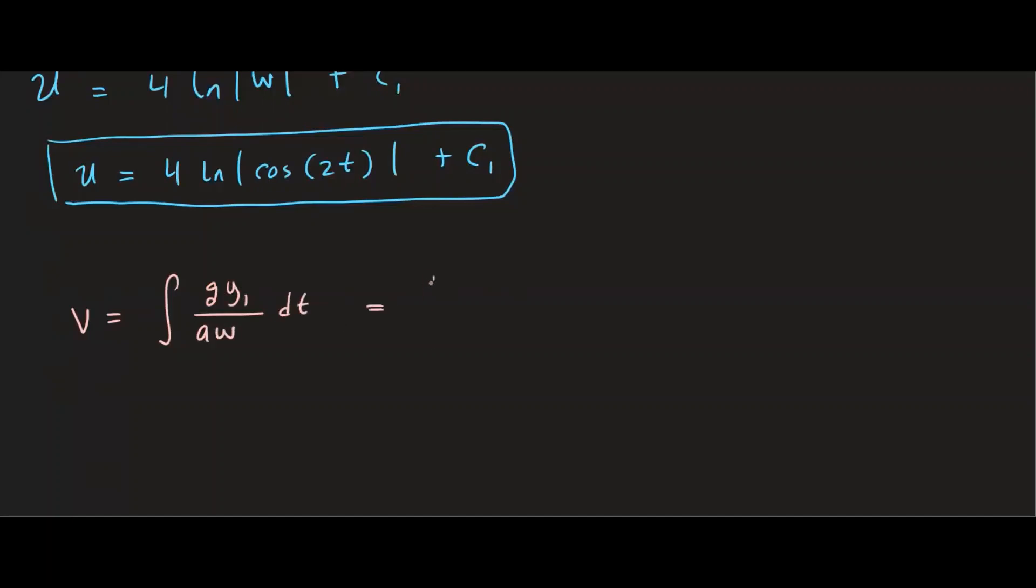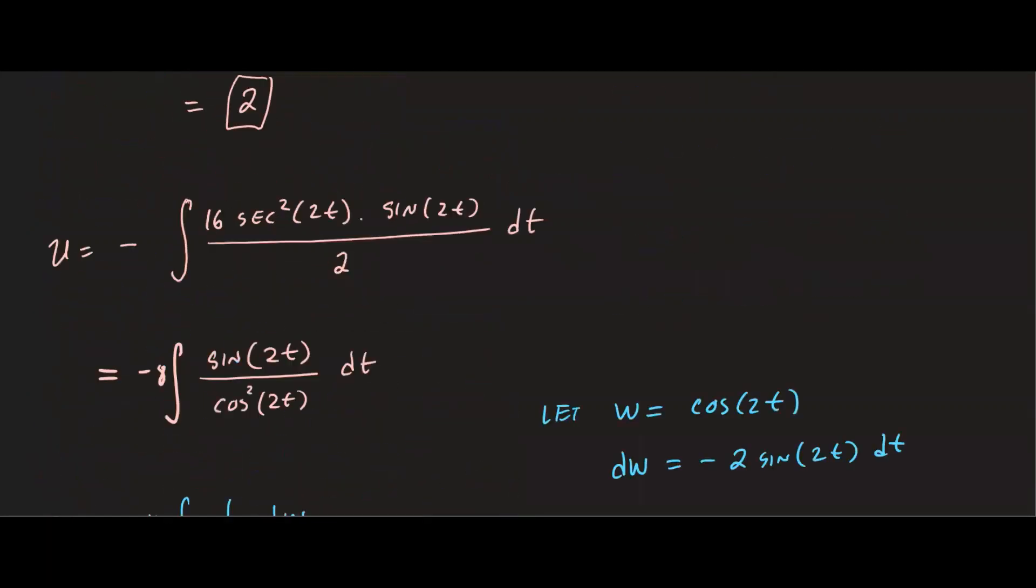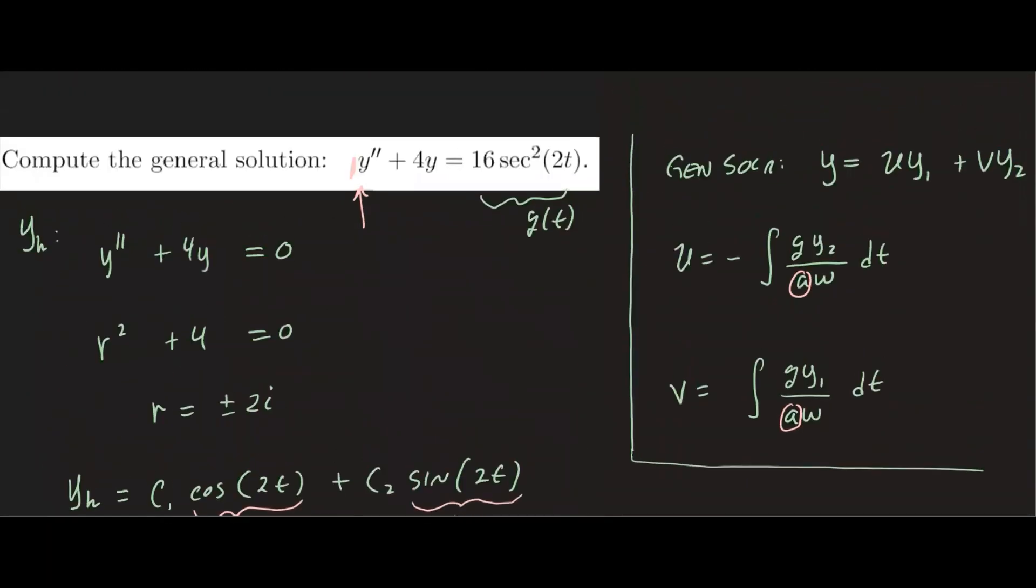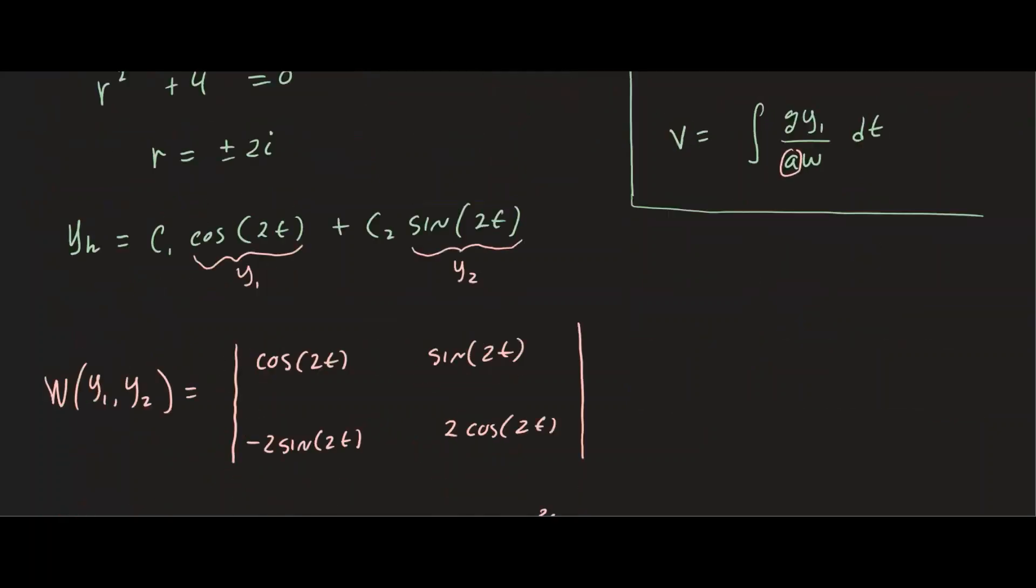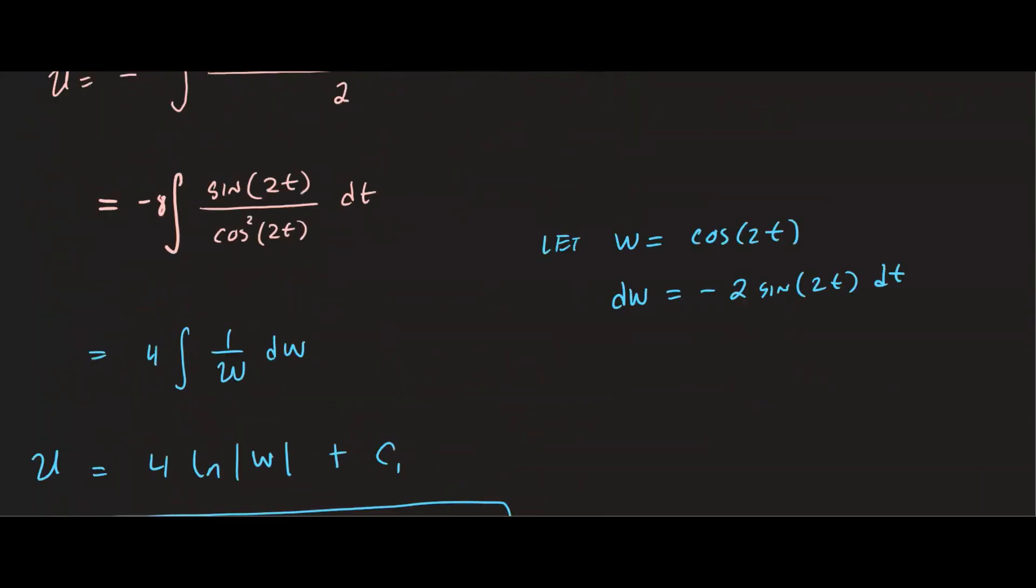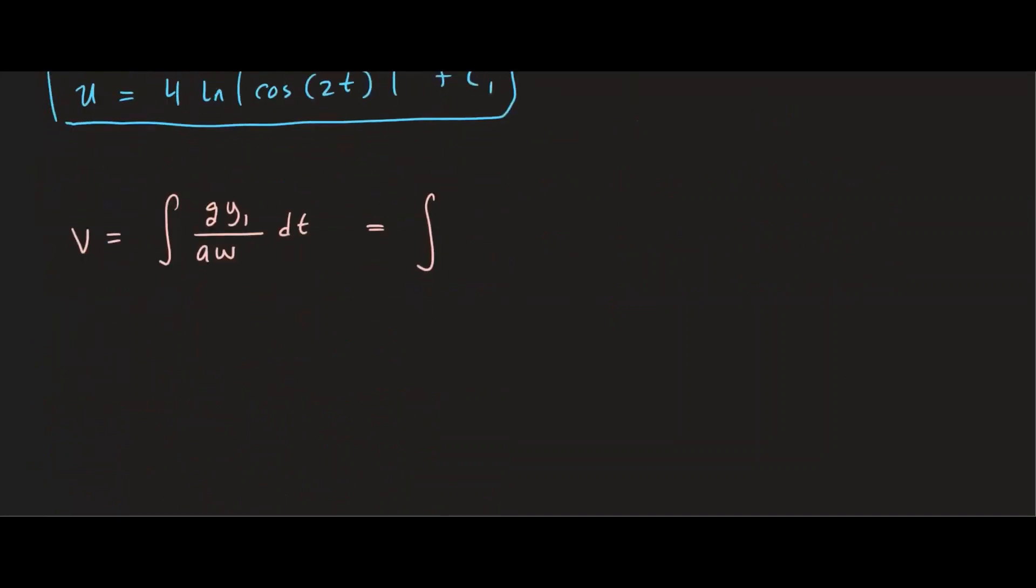So v is the integral of g times y1 over a times w dt. We know g equals 16 secant squared 2t, y1 is cosine 2t, and the Wronskian is 2. So we have 16 secant squared of 2t cosine 2t over a is 1, Wronskian is 2 dt.